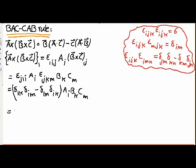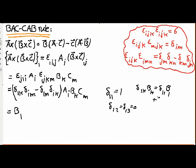Applying the third identity gives delta_{1k} delta_{im} minus delta_{1m} delta_{ik}, multiplied by a_i b_k c_m. Summing over k: delta_{1k} b_k equals b_1, because delta_{11}=1 and delta_{12}=delta_{13}=0. So the first term gives b_1.